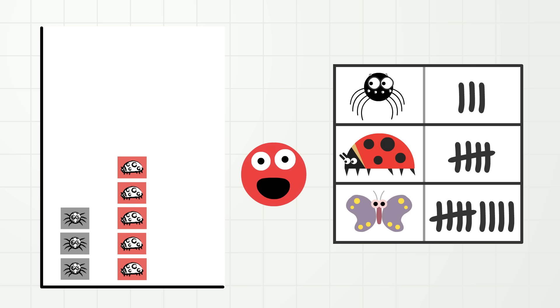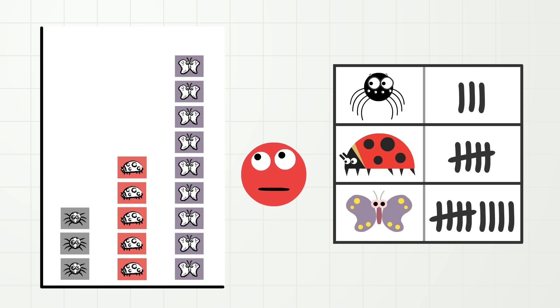And how many like the butterfly the best? That's right, nine! One, two, three, four, five, six, seven, eight, and nine. And now, our pictograph is complete!